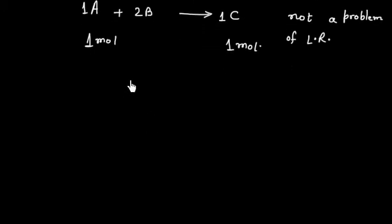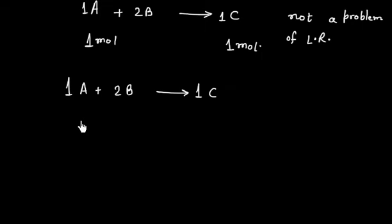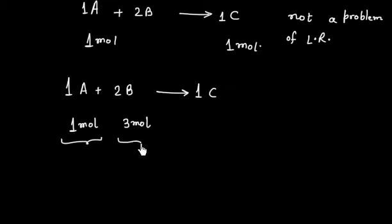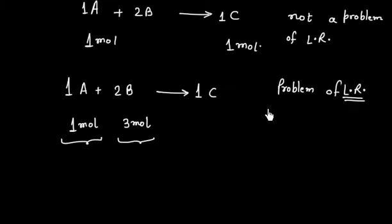But if we have A + 2B → C and we are given 1 mole of A and 3 moles of B — now both reactants are given — so this is a limiting reagent problem. Whenever more than one reactant is given, this is a limiting reagent problem.